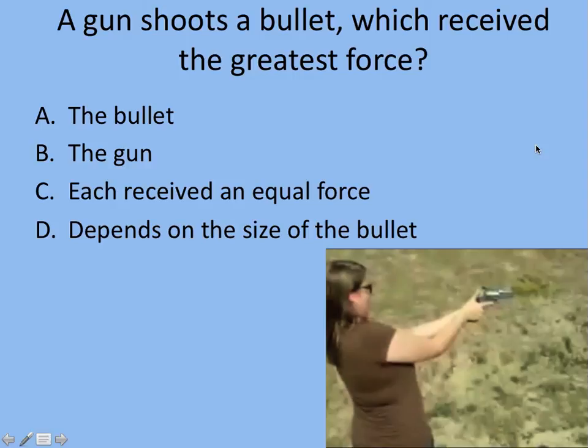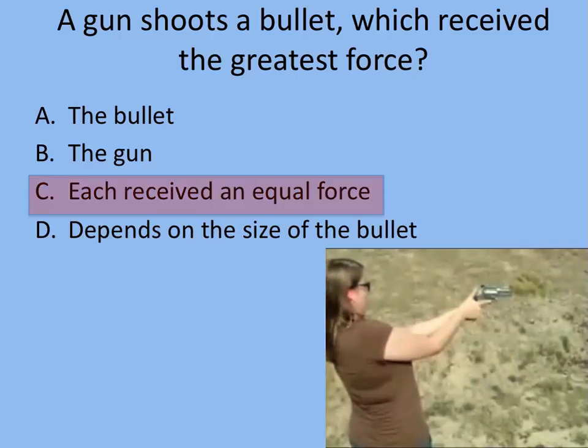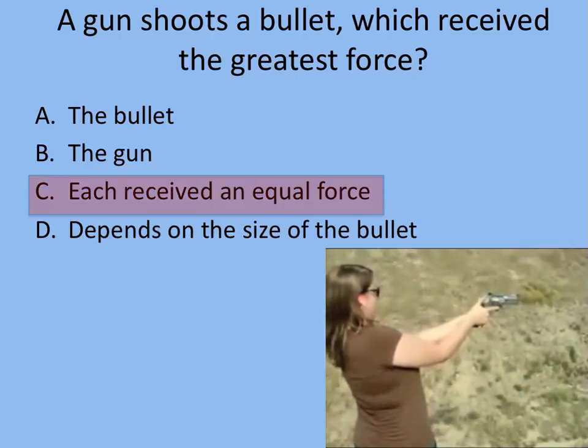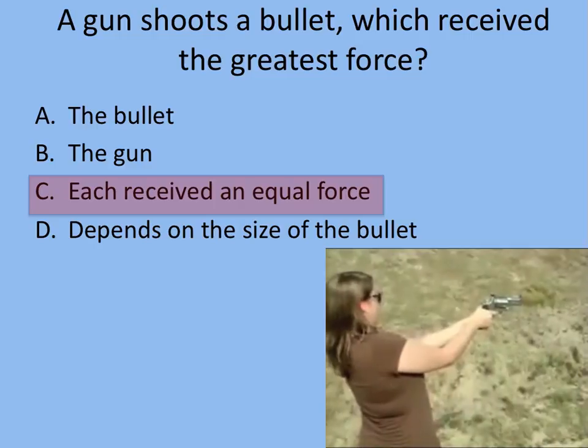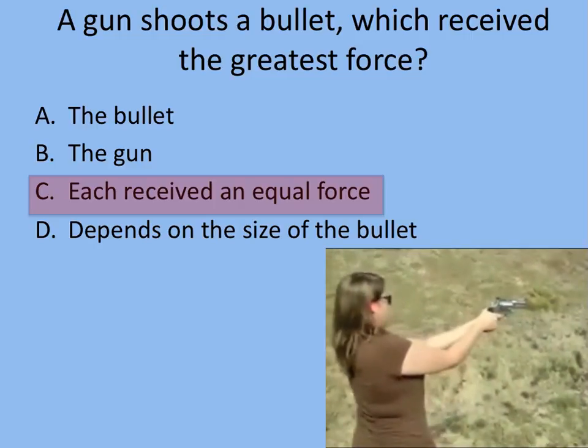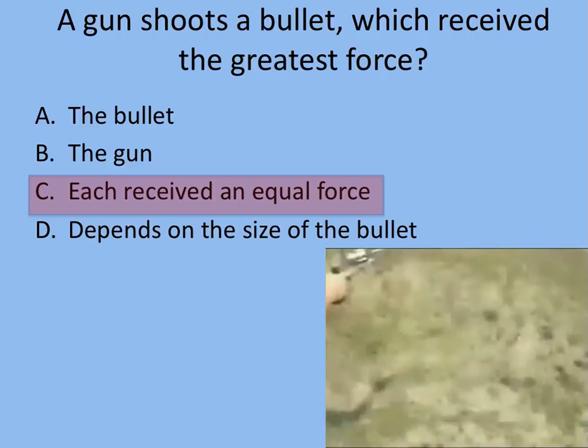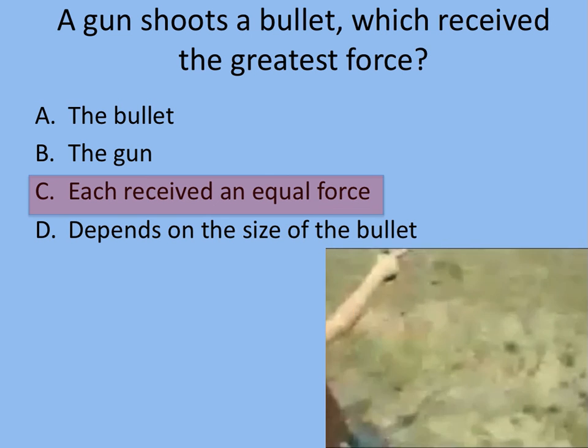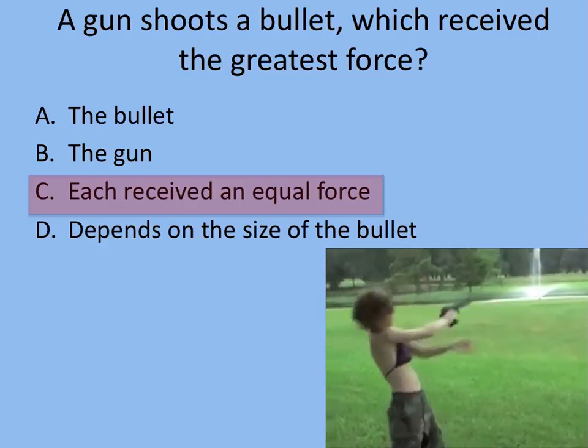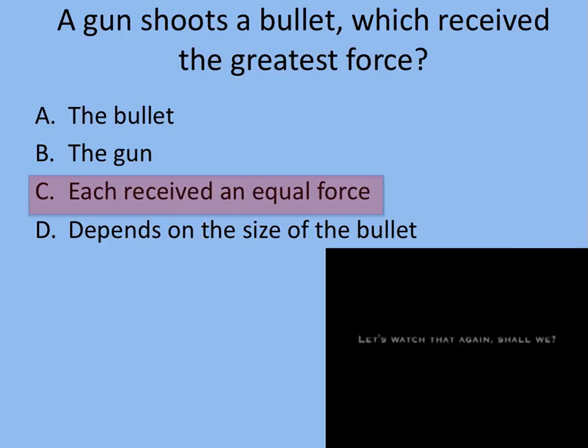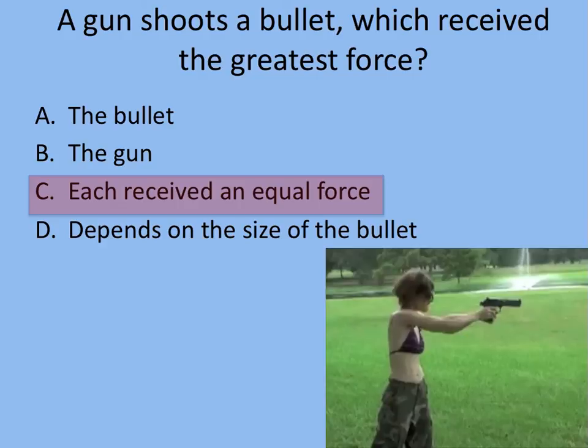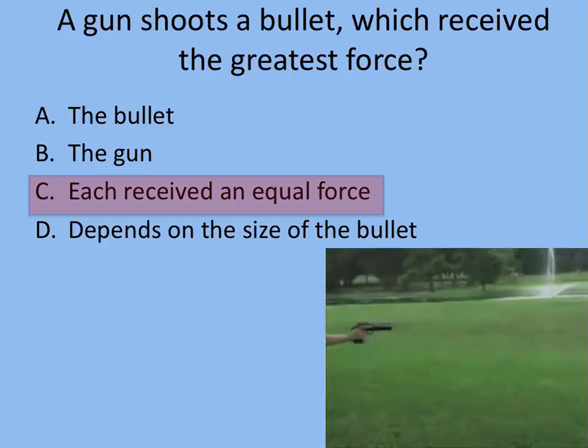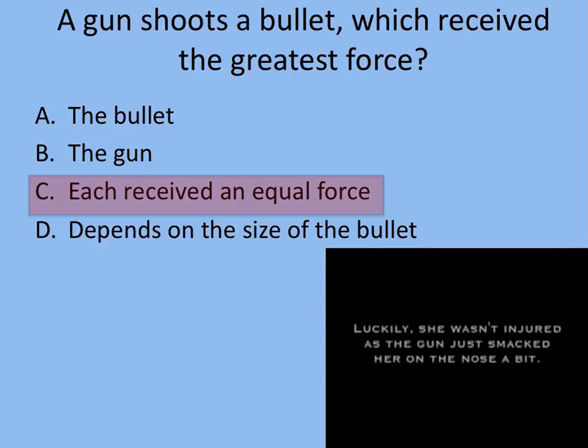How about when you shoot a gun? Which receives the greatest force? Pause it. Got your answer. Here we go. It is the same. But what is different? The masses are different. So the bullet accelerates a lot more, but the gun does accelerate, as this woman discovers when she fires the gun. It does accelerate back, but it's not going to kill you. At least we hope not. And so hopefully they learn that lesson. The mass of the bullet much less, and so the acceleration of the bullet much more for the same force.